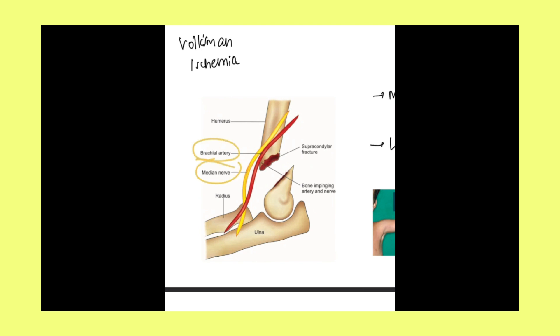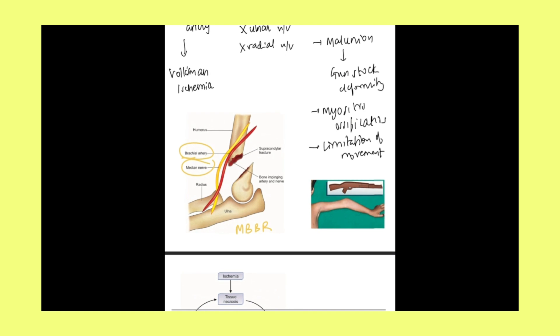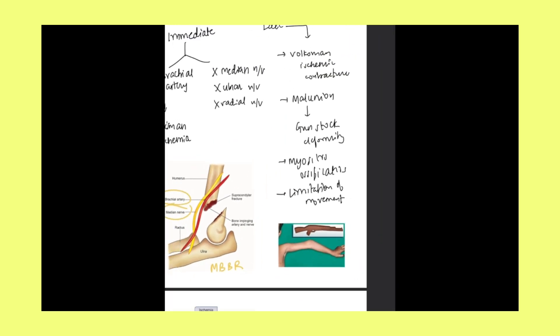Radial nerve also passes somewhere here itself. So MBBR, remember the mnemonic, from medial to lateral, passing from the cubital region.